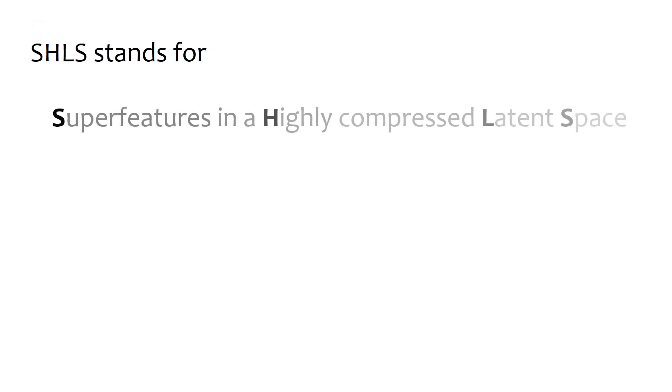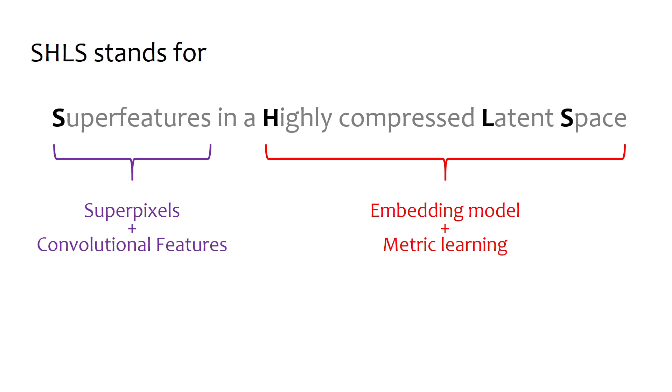SHLS stands for Super Features in a Highly Compressed Latent Space, where the super features are a combination of super pixels and convolutional features obtained from an embedded model trained with metric learning.